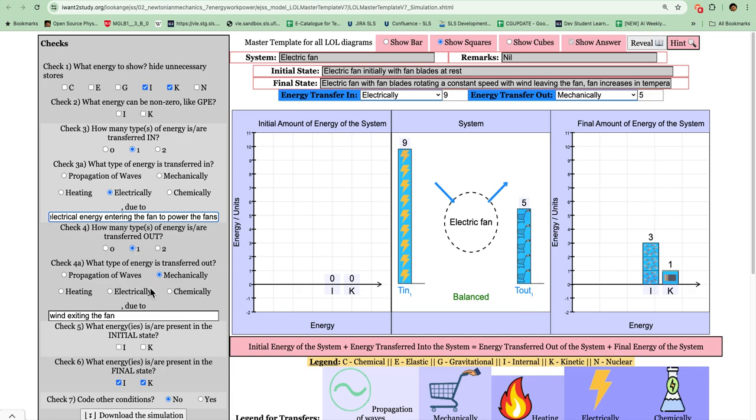So we will select one and then choose mechanical. It is not the propagation of wave because this is not light, this is not sound, but this is actually actual movement of air molecules moving away. So we select the mechanical. So it's wind exiting the fan.